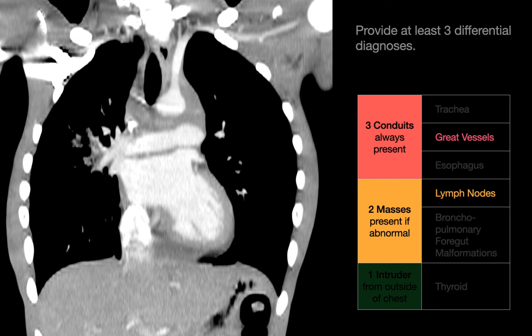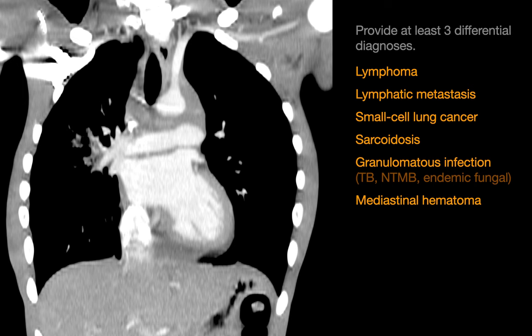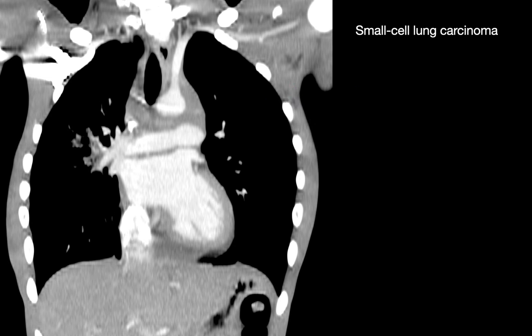The top causes of bulky mediastinal lymphadenopathy can be divided between three main malignant causes and three main inflammatory non-malignant causes. CLL and pneumoconiosis-related lymphadenopathy tend to be not so confluent and infiltrative as this, which means that our differential diagnosis for this particular case would be: lymphoma, lymphatic metastases, small cell lung cancer, sarcoid or granulomatous infection, or mediastinal hematoma. This particular case is an example of small cell lung carcinoma.